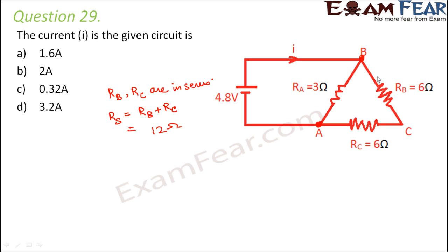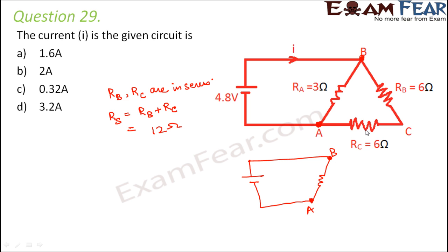Now that you have calculated the equivalent combination of R_B and R_C, your circuit becomes somewhat like this. This is point A, this is point B. Instead of having B, C and C, A you now just have one resistance of 12 ohms, and the other resistance is 3 ohms. So now you can see that these two resistances are in parallel combination.